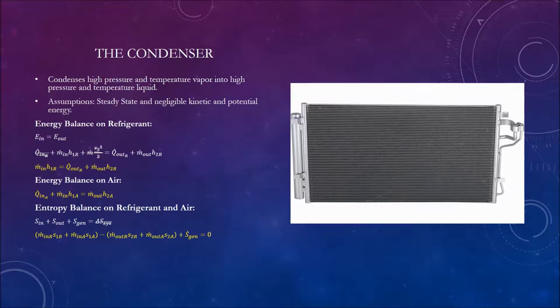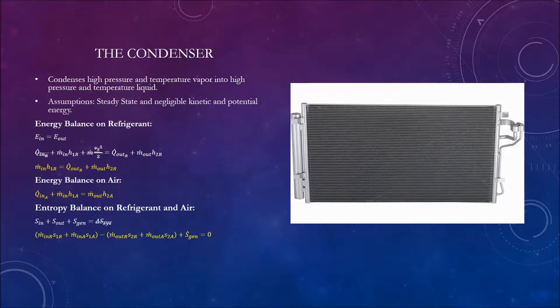Entropy balance on refrigerant and air: entropy in plus entropy out plus entropy generated equals zero, which means the rate of entropy out of air and refrigerant minus the rate of entropy out of air and refrigerant plus the rate of entropy generated equals zero.